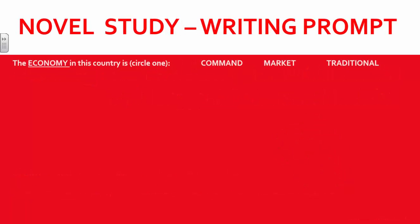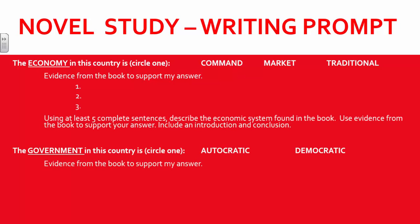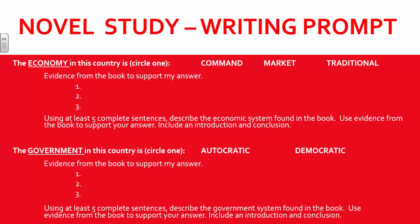Here is an example of a writing prompt that students can complete. Students are asked to determine the government and economic system found in the book. For each, they should provide evidence from the novel and then present all of this in a developed paragraph. Students could also be asked to predict what will happen in the next novel in the series. In fact, some students may choose to continue reading the entire series.